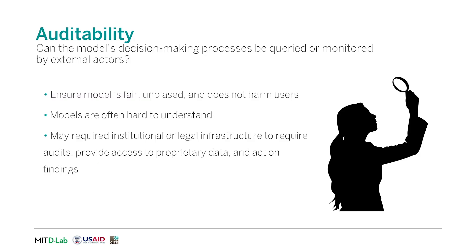The fifth criterion is auditability. Can the model's decision-making processes be queried or monitored by external actors? Increasingly, organizations are turning to black box machine learning solutions, whose inner workings can range from unintuitive to incomprehensible. It is important that the outputs can be monitored externally to show that the model is fair, unbiased, and does not harm some users. This may require additional infrastructure, whether it is institutional or legal frameworks that require audits, provide auditors with secure access to data and algorithms, and require people to act on those findings.